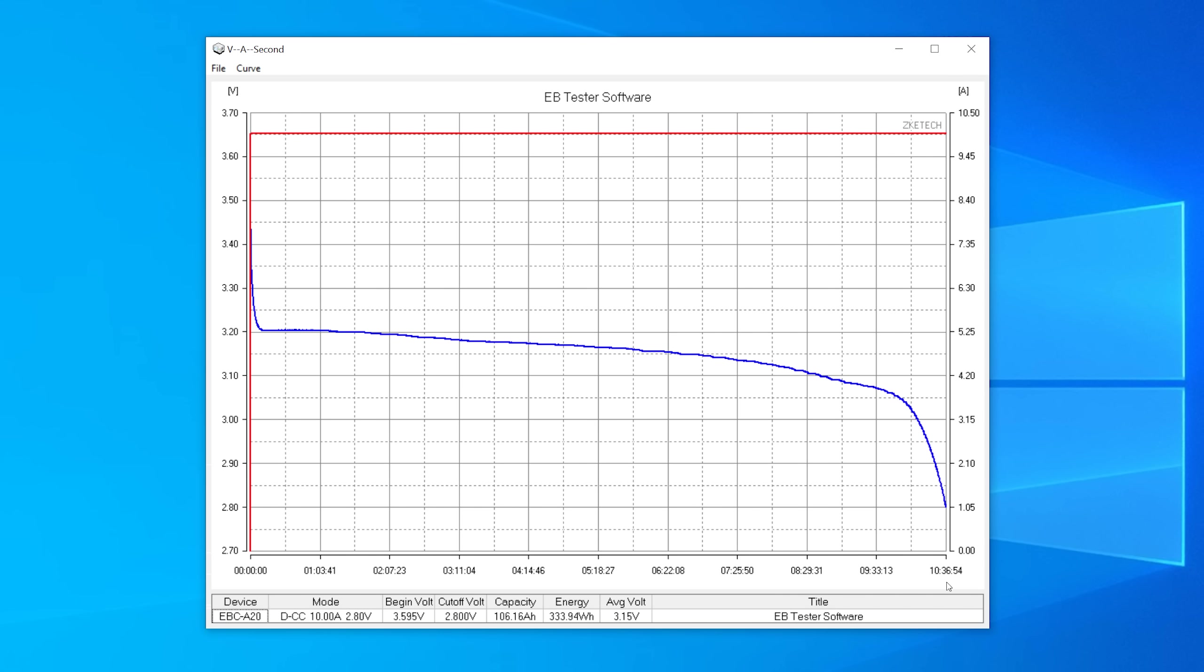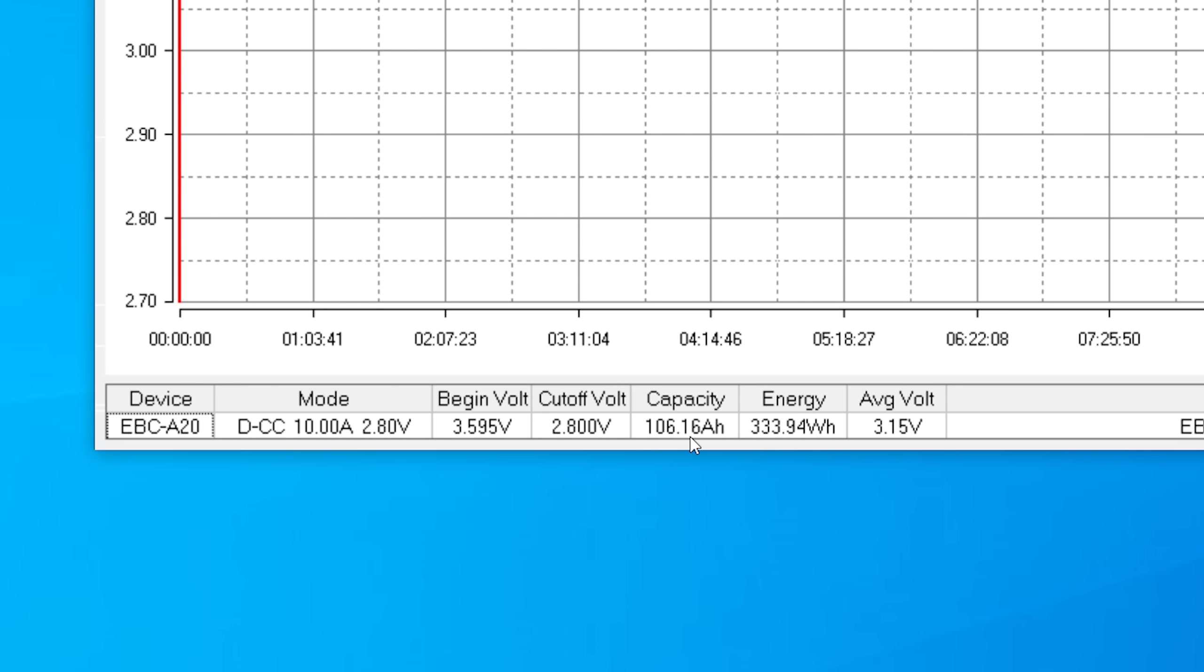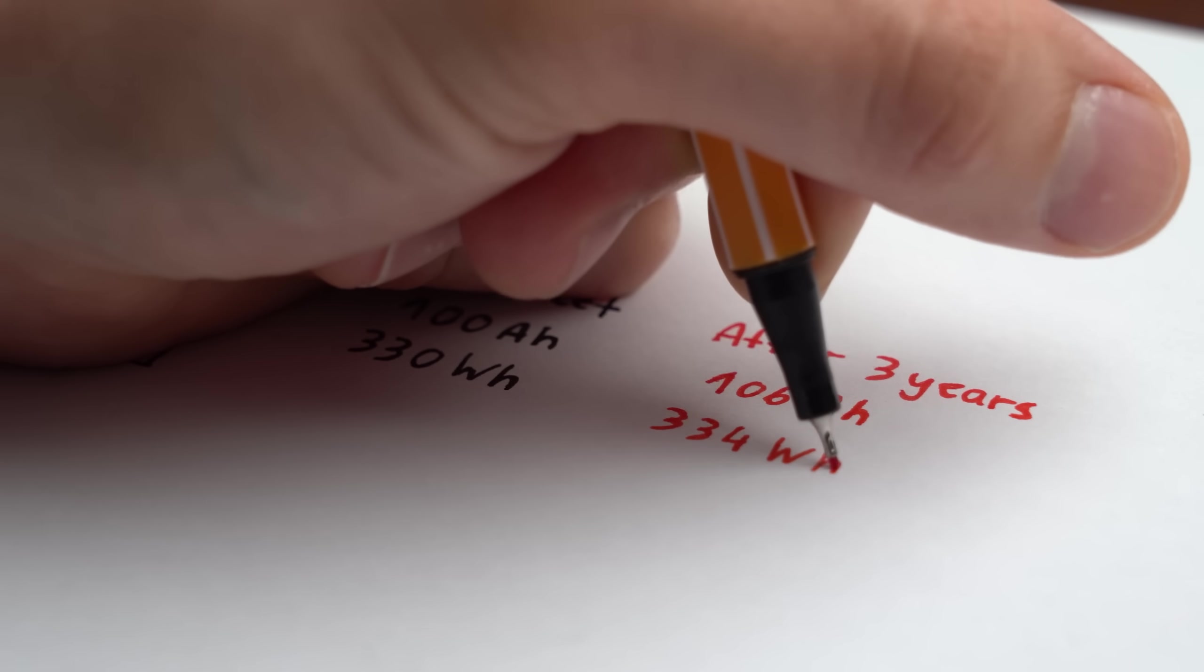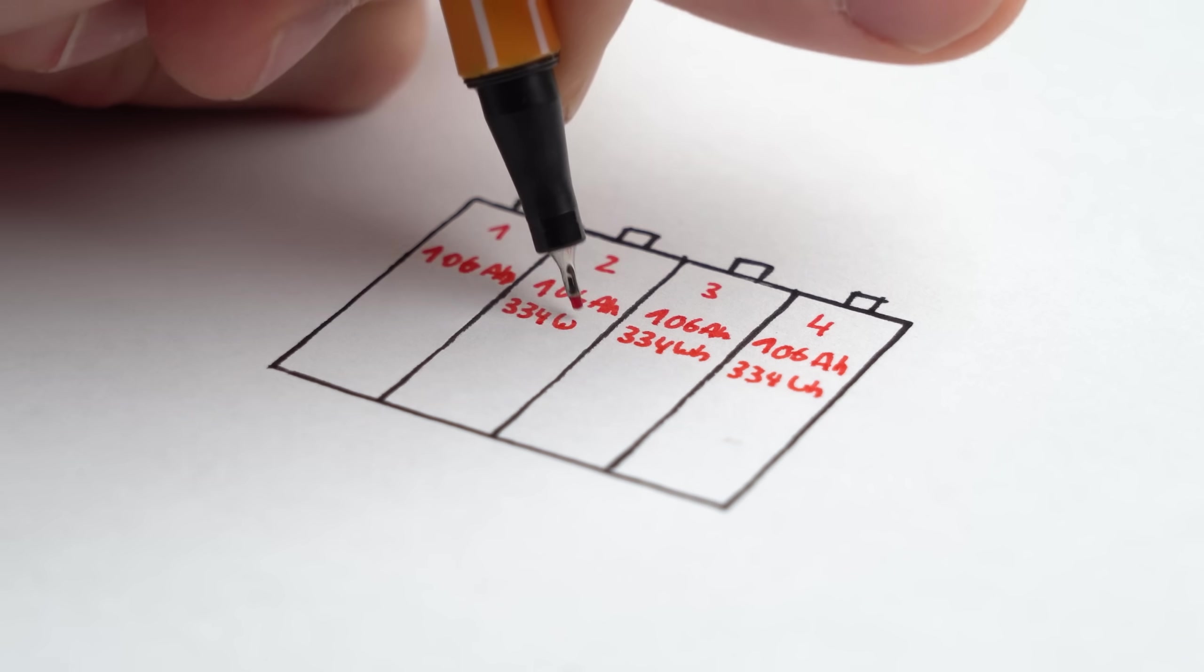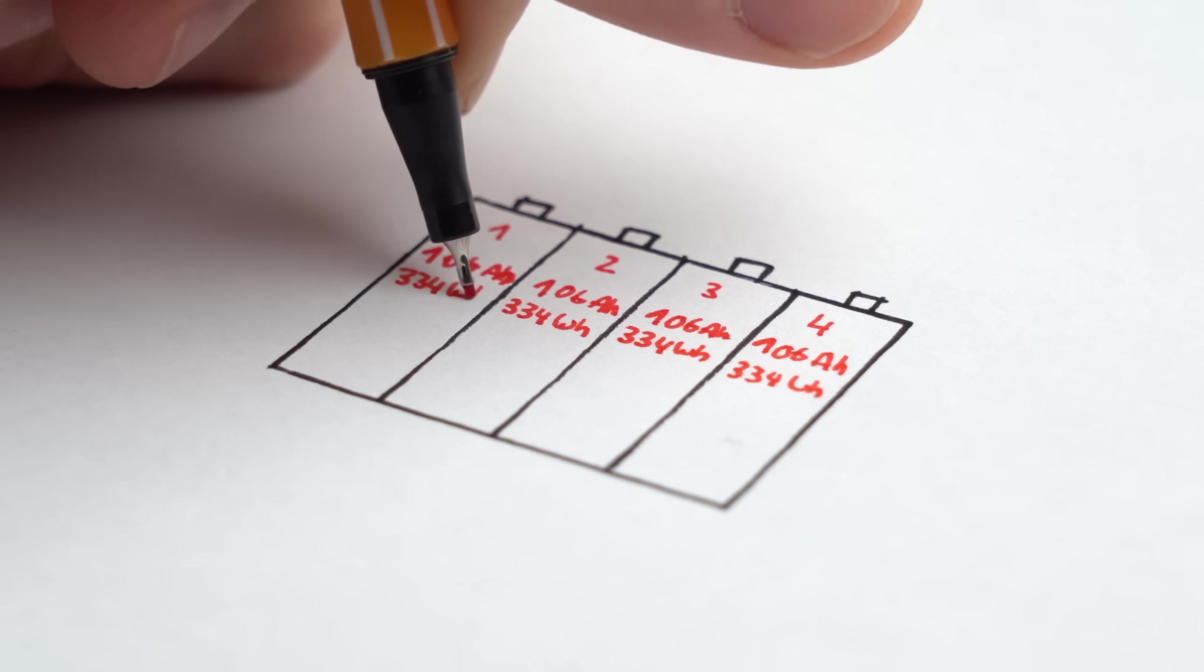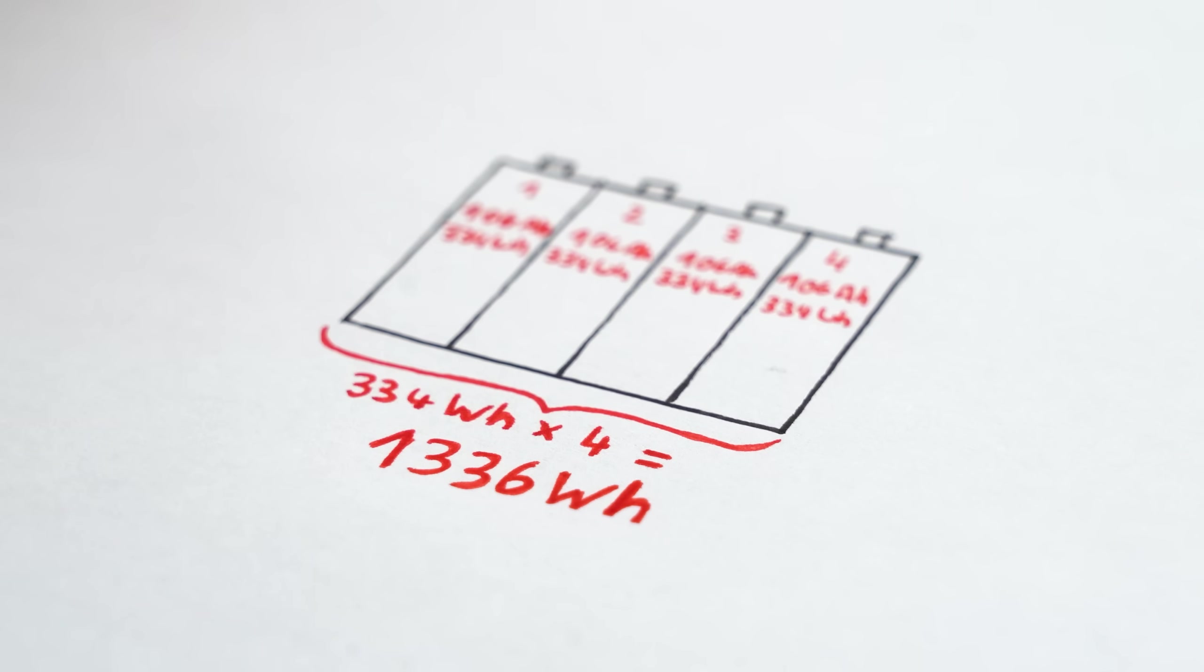But anyway after around 10.5 hours the measurement came to an end and revealed a remaining capacity of 106Ah and an energy of 334Wh which is frankly speaking fantastic and way better than I imagined. That basically means that my battery pack was and still is well suited for my solar garage application but of course only if we assume that all cells would perform this way.